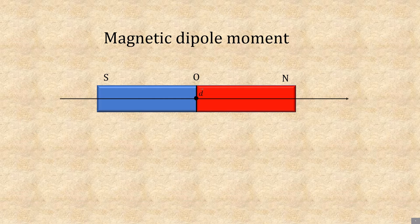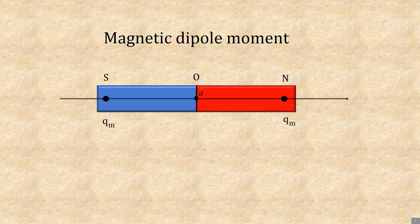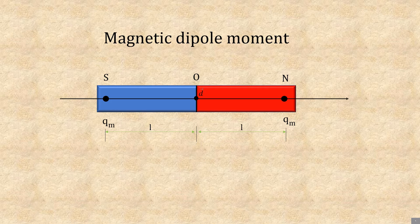Let Qm be the pole strength of the magnetic pole. Let l be the distance between the geometrical center O and one end of the pole.